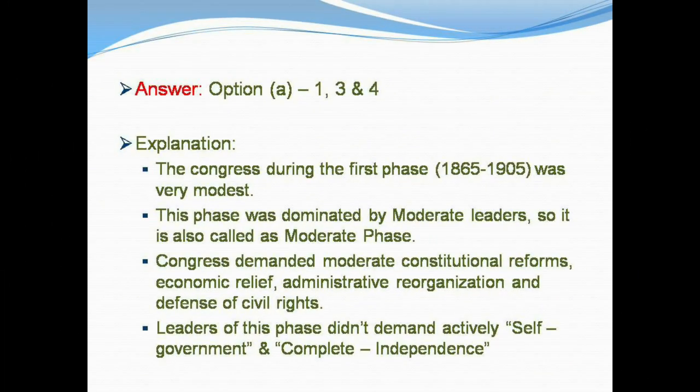The right answer is Option A: One, three, and four. Congress during the first phase, 1865 to 1905, was dominated by moderate leaders — also called the moderate phase. Congress demanded moderate constitutional reforms, economic relief, administrative reorganization, and defense of civil rights. Leaders of this phase did not actively demand self-government or complete independence.